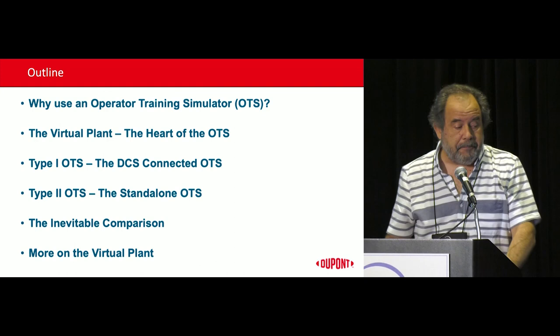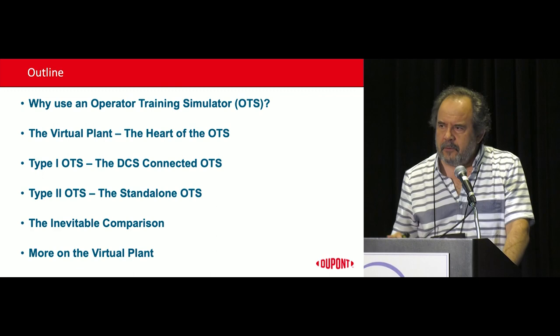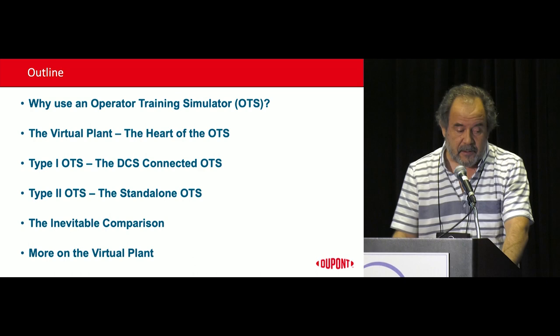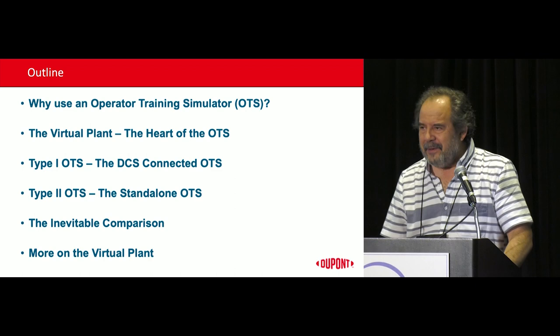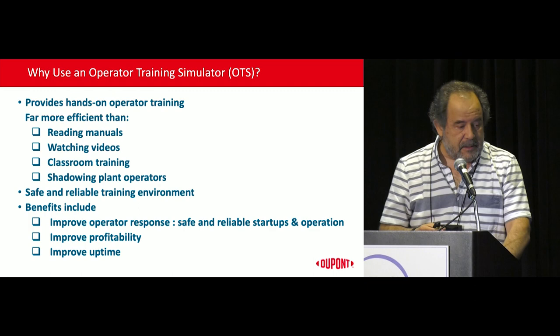So this is what I'll be talking about. Why would you want to use an OTS in the first place? I'll talk a little bit about virtual plants, which is the heart of the OTS. And then I'll tell you about the two types of OTSs that we have at DuPont — the one we call the DCS connected one and what we call the standalone OTS. And as soon as you bring these two, somebody wants to know how they compare. So I'll talk about the inevitable comparison. And I'll wrap up things with a little bit more about the role of the virtual plant in the whole process.